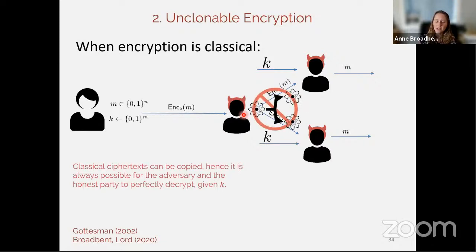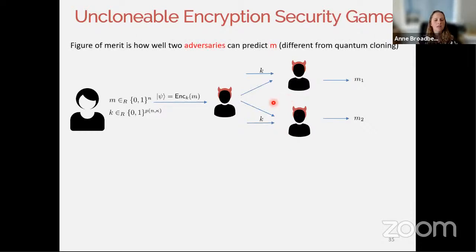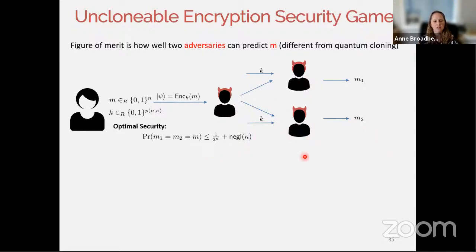The no-cloning theorem tells us this copying could be prevented using quantum encodings. With unclonable encryption, we use a quantum encoding for the classical message — encryption creates a quantum state — and we limit the possibility of adversaries to both be able to predict m. This is different from quantum cloning: here it's an adversarial situation where we need to quantify over all possible operations of the adversaries. The optimal security for a random message would be one over 2^n, since the adversaries could do a coordinated guess.